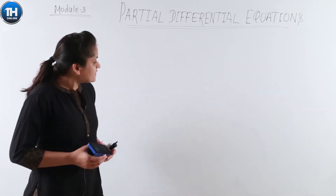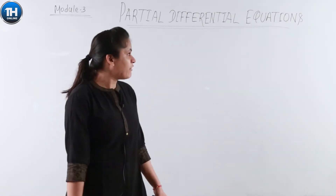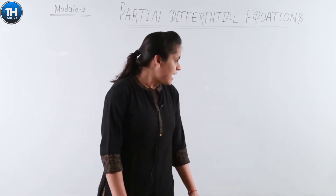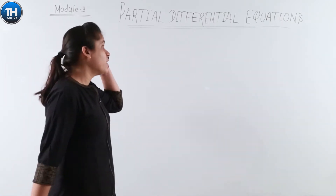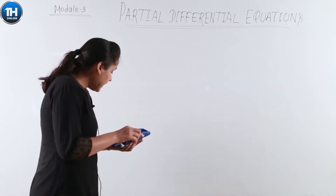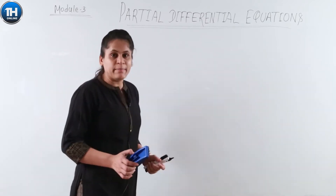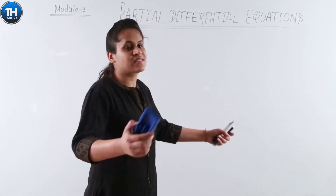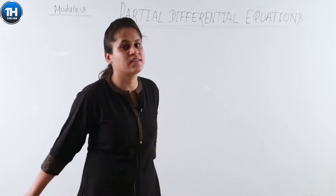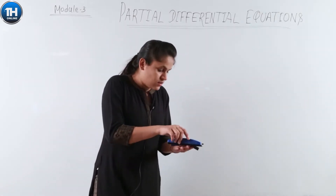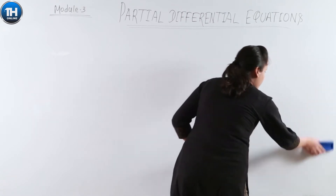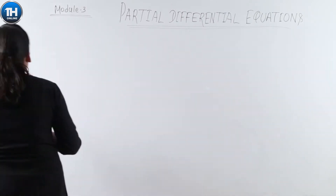Up to here in Mathematics 3 we have completed our two modules: Probability and Probability Distributions. Today I am going to start the third and last module — Partial Differential Equations. This is the simplest of all three, because probability and probability distributions have at least some theory, whereas this topic is purely numerical. You just have to solve equations and find the answer — no theory, only one or two rules to remember, and we will do the numericals.